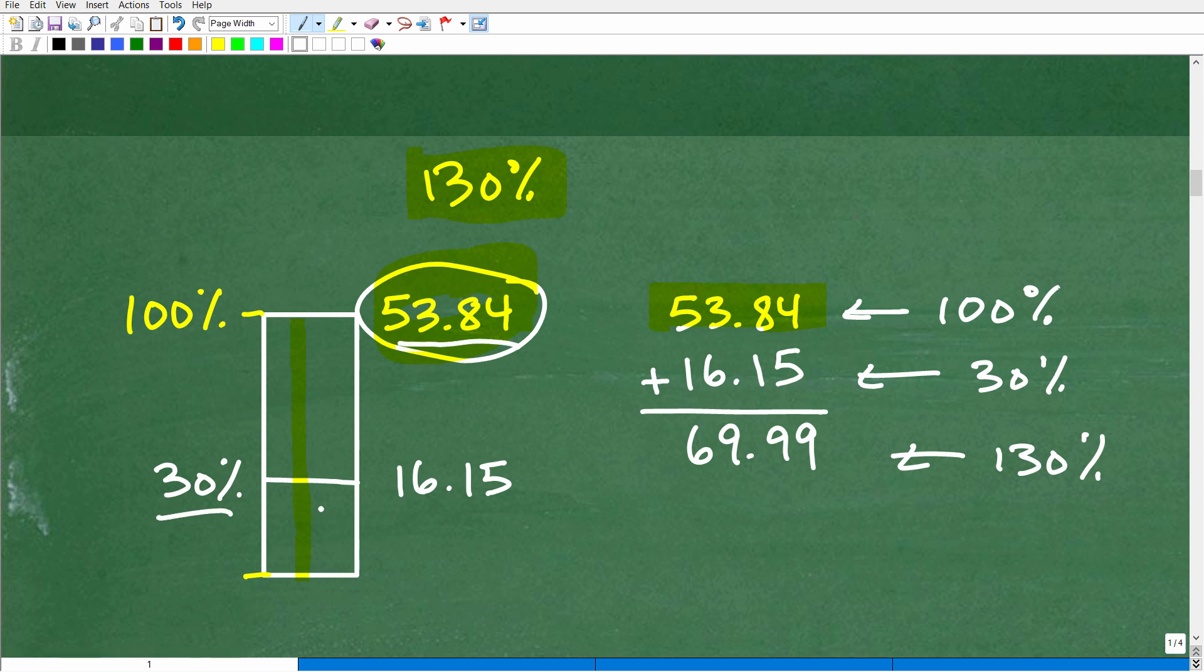So what's 30% of 53.84? Well, 30% of 53.84, I could take that 0.3 and multiply by 53.84, but it's going to be 16.15. So if we add up the 100% and the 30%, we're going to get 69.99, which is effectively 70.